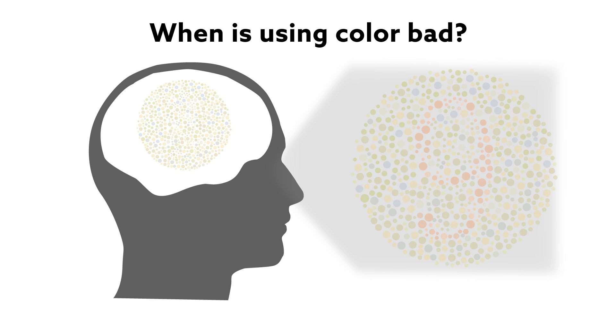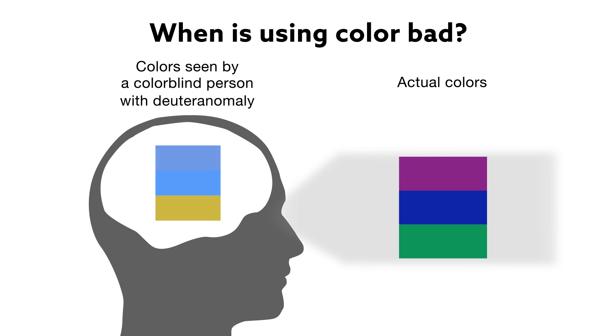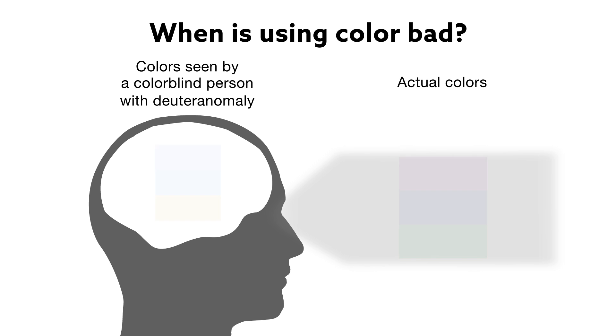Colorblindness, or color deficiency, is the inability to see colors or differences in color under normal lighting conditions. The most common form of colorblindness is deuteranomaly, which is a reduced sensitivity to green light. This condition makes it difficult for people to distinguish between green and red hues.